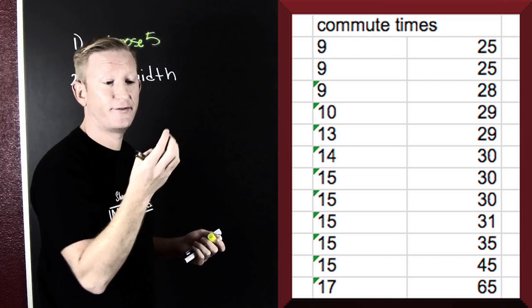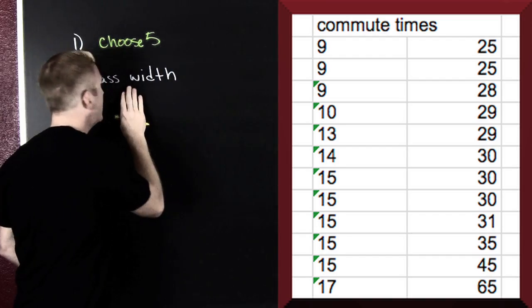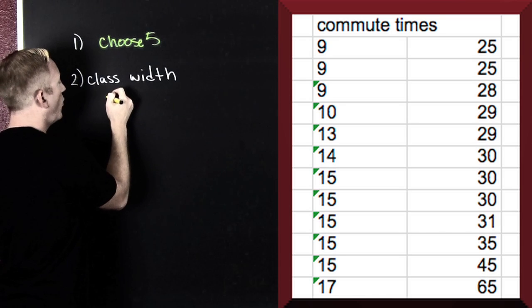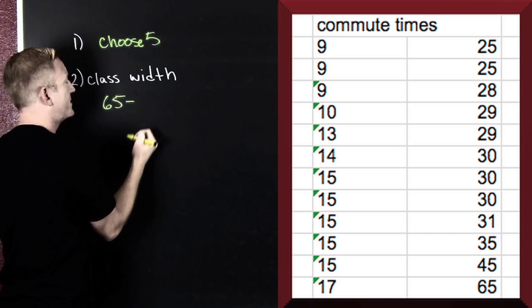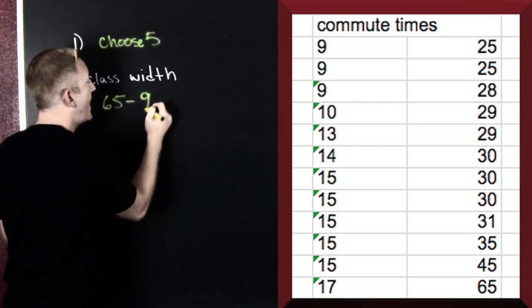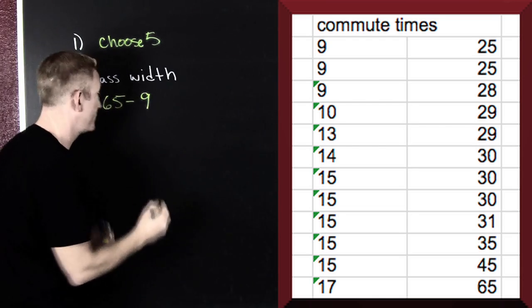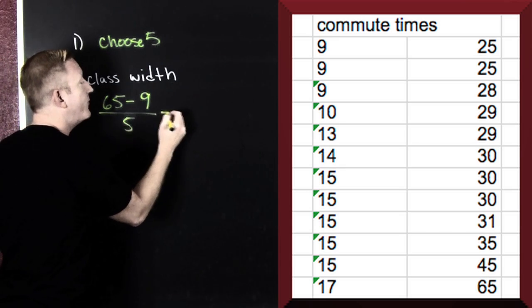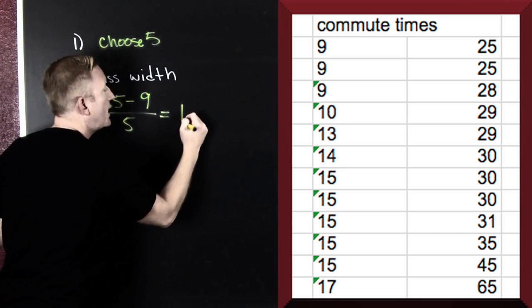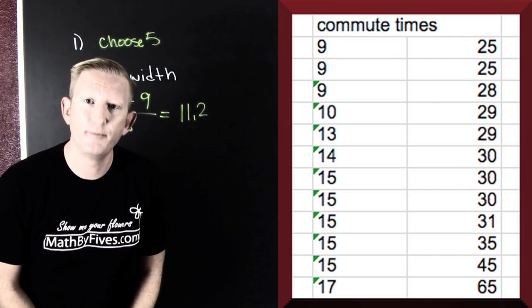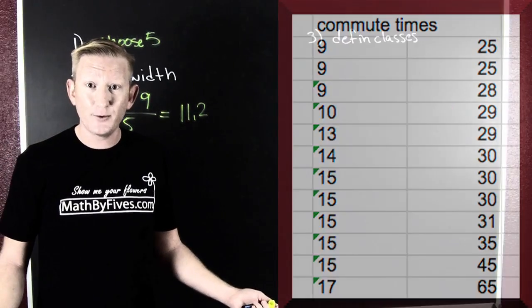Math high fives. Here we go. We want to find our class width. That's our high value, or 65. That was somebody who lived quite far. And then subtract off our low value of 9. That was somebody who lived in the dorms. And then we're going to divide it by the number of classes, or 5. If we pound that out, we're going to get 11.2. What is this? This is the width of my intervals, so that they're all equally spaced.